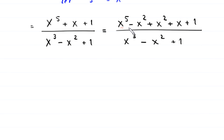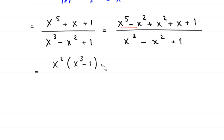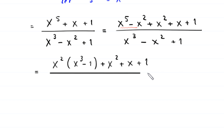From the two terms x to the power 5 minus x squared, we can factor out x squared. So we have x squared as a common factor, leaving x cubed minus 1 in the bracket, plus the remaining x squared plus x plus 1, divided by the denominator x cubed minus x squared plus 1.